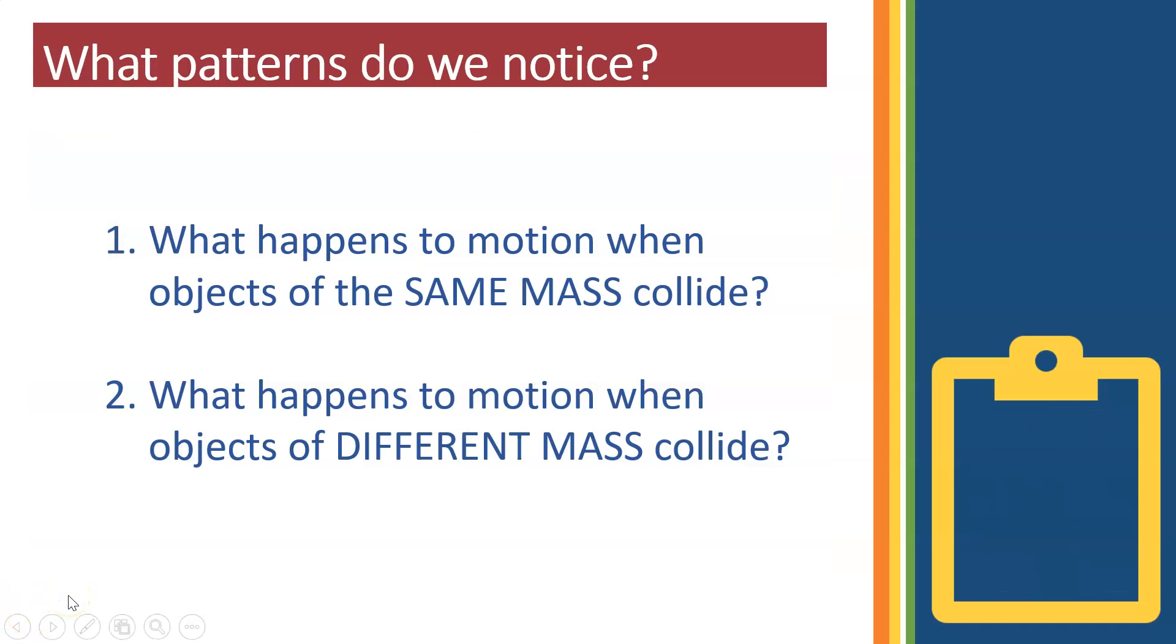So what patterns did you notice? What happens when two objects with the same mass collide? What happens when objects of different masses collide? Remember, we're concerned with the motion after impact. Take a moment, look back at all of the data, and come up with some summary statements, some patterns for each of these questions. Do this now.